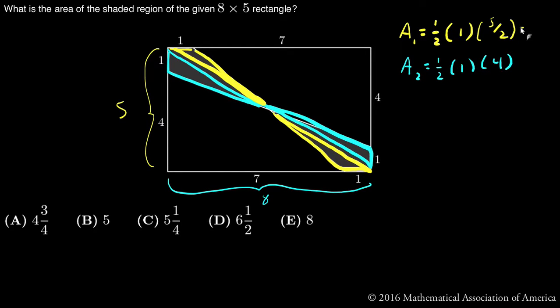Working this out, I end up with five fourths, and I end up with two as the areas.